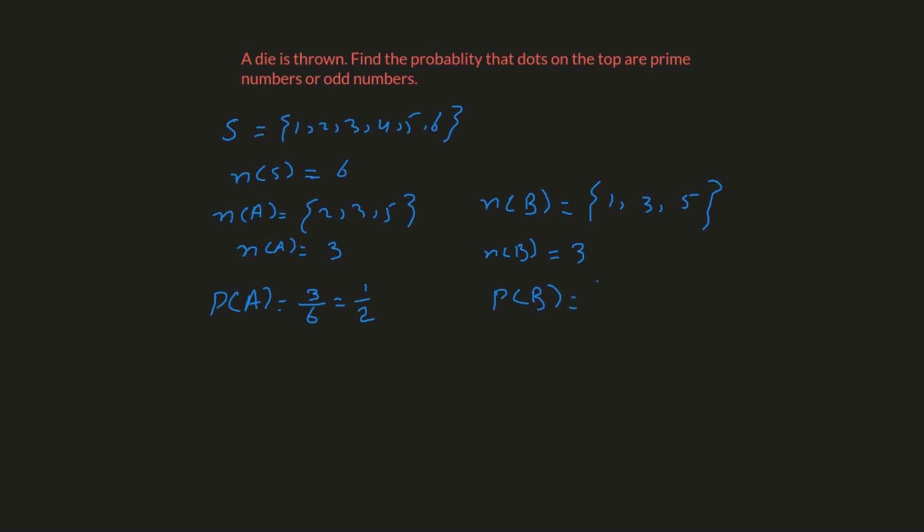The probability of the second event, P(B), is exactly the same: three out of six, which is one half. Now, because these two events are overlapping sets, we also need to figure out the probability of A intersection B.